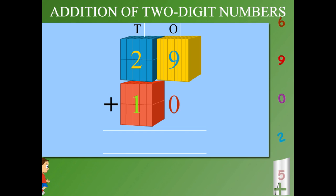9 plus 0 is 9. And 2 tens plus 1 tens is 3 tens. So you get 39. Good work!